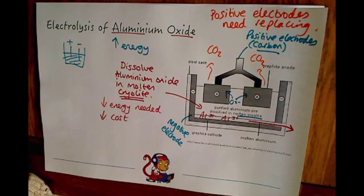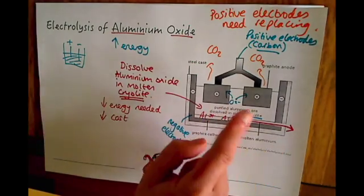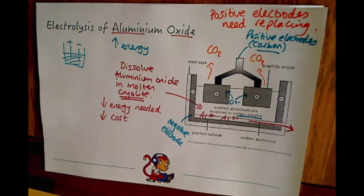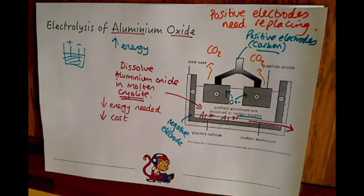That, in essence, is the electrolysis of aluminium oxide. Just bear in mind when you get a diagram showing electrolysis: try to pick out where the electrodes are and what's happening. And in this case, remember the importance of cryolite.